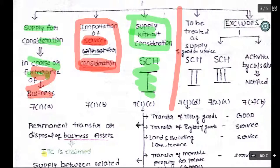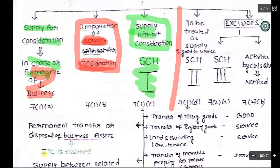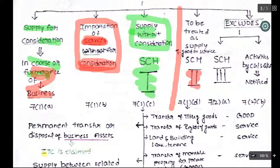There are certain supplies to be treated as supply of goods only, and certain supplies to be treated as supply of services only. This is nothing but what is covered in Schedule 2. For example, when you enter a hotel and they supply food — in the earlier regime there was VAT and service tax. But in GST, it is treated as a supply of services only. So Schedule 2 clarifies what is to be treated as supply of goods and what is to be treated as supply of services.